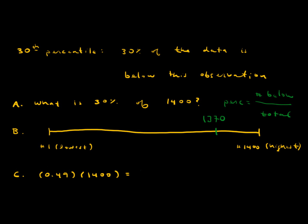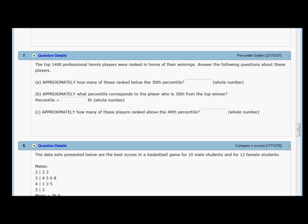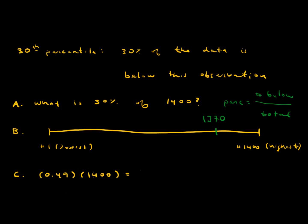For question C, approximately how many of these players ranked above the 49th percentile? Now we're asking above instead of below. If we do 0.49 times 1,400, we get 686. Which means that there are 686 players below the 49th percentile. But the question is asking how many are above the 49th percentile.